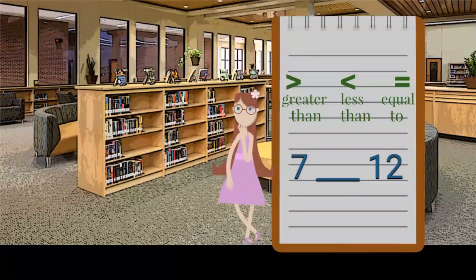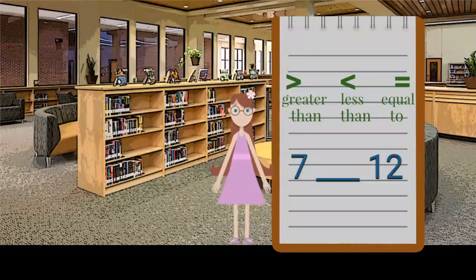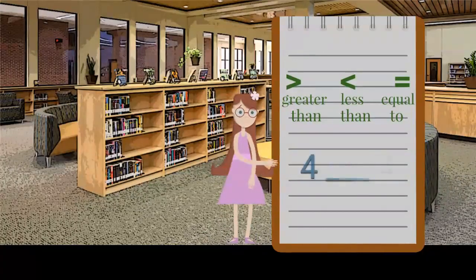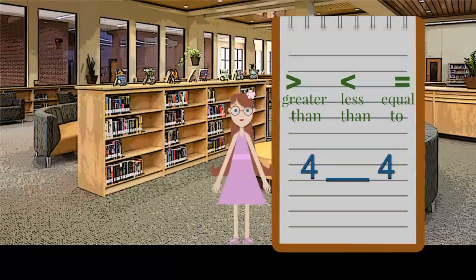Let's compare seven and twelve. Seven is less than twelve — seven is smaller than twelve. Finally, let's compare four and four. Four is equal to four; they are the same.